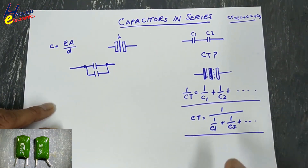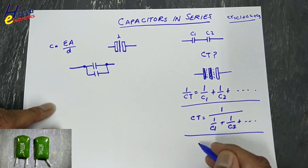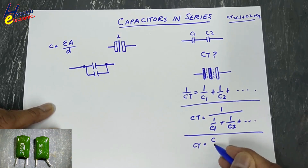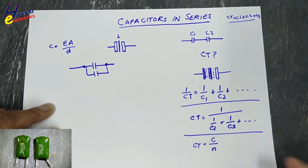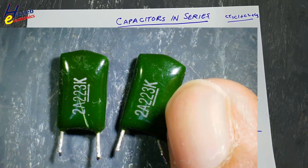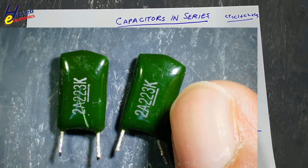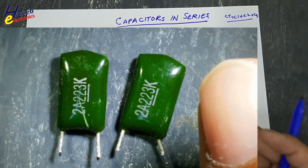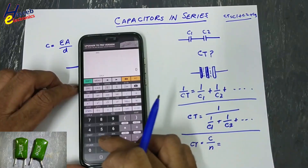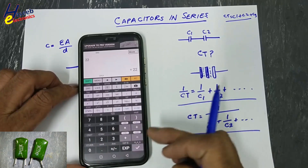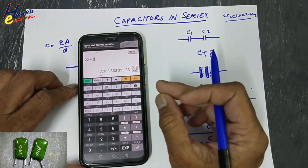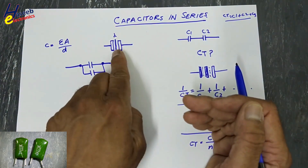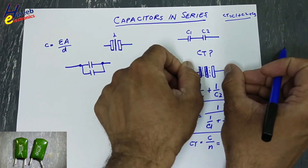The total capacitance in series is calculated using the parallel resistor method: 1 over CT equals 1 over C1 plus 1 over C2, and so on. For same-value capacitors, CT equals the value of one capacitor divided by the number of capacitors. For example, two 22nF capacitors in series gives 22 divided by 2 = 11nF. Three 22nF capacitors give 7.33nF total capacitance.